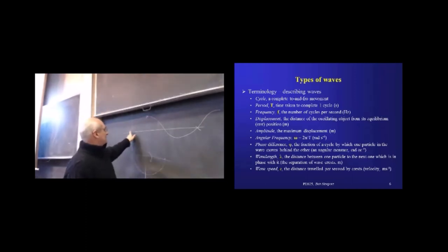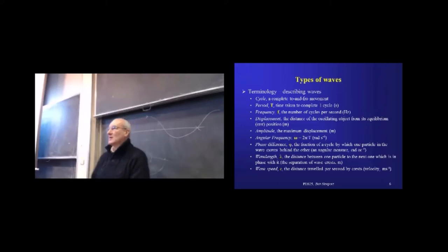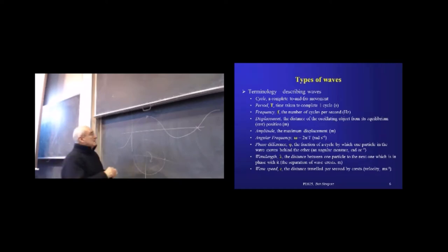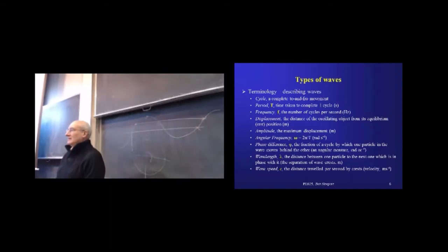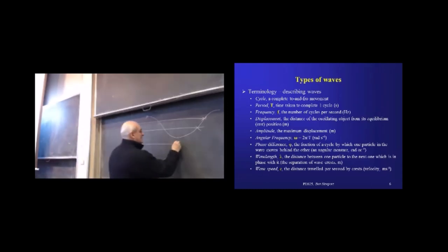The wavelength is the distance from any point to the next one that's in phase with it — the next one that's 2π away in terms of phase angle. So from one crest to the next crest, or equivalently from any reference point to the nearest identical point on the wave, either forwards or backwards — that distance is one wavelength.